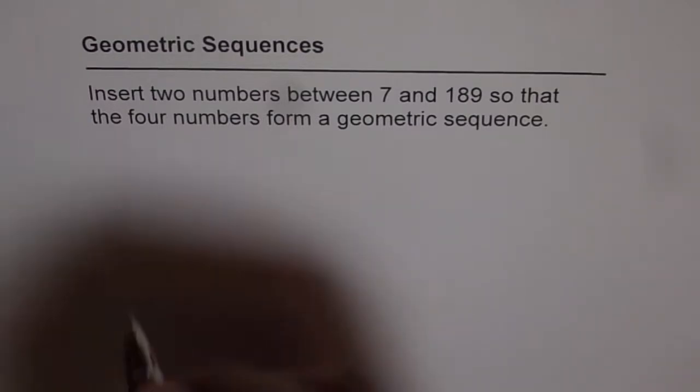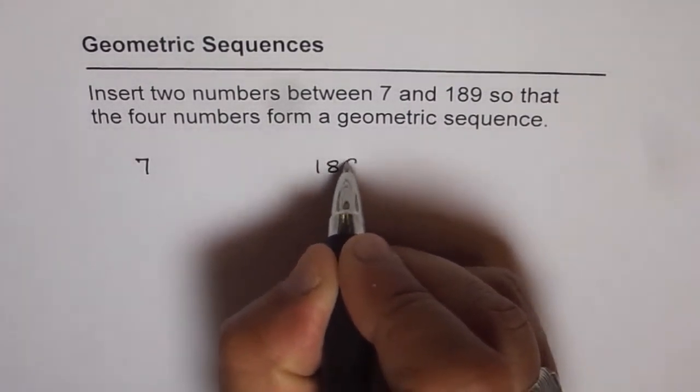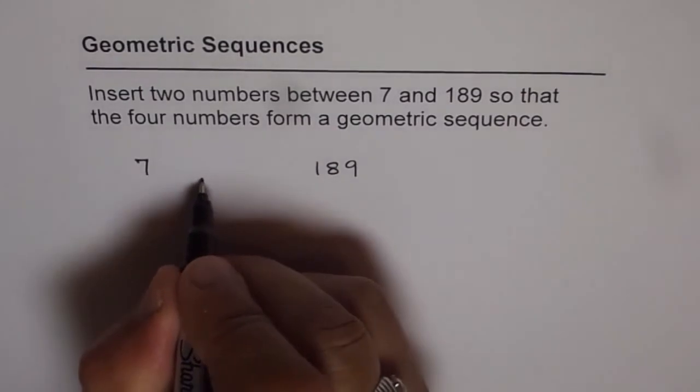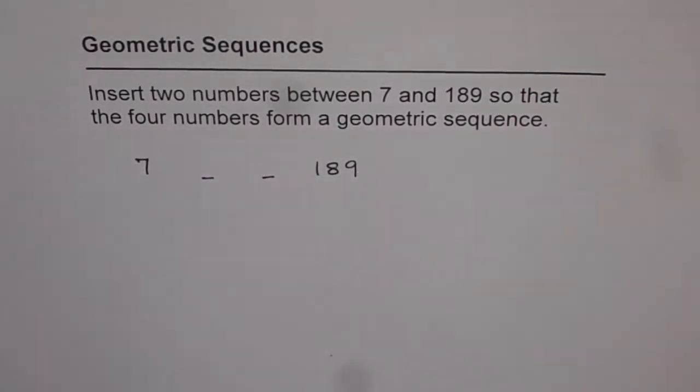So what we are given is that there are two numbers. One is 7 and the other one is 189. And what we need to do here is insert two numbers in between so that all four of them form a geometric sequence.